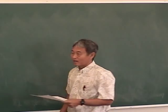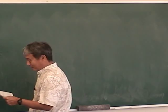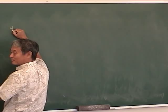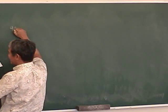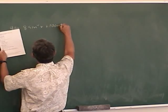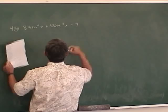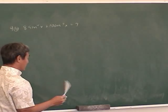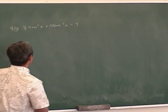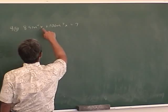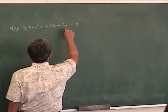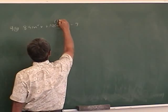Solving equations — this is the meat of the test. For problem 4D: sine to the fourth x plus 10 cosine squared x equals 7. You can either change everything to sine or everything to cosine. The easiest approach is to replace cosine squared with 1 minus sine squared. That substitution is cleaner.